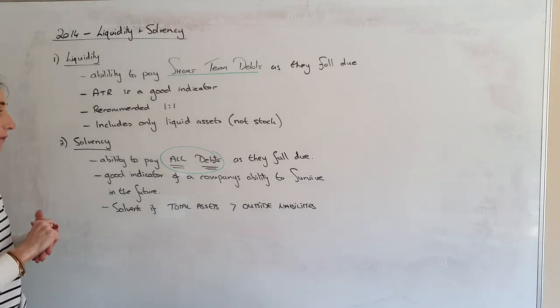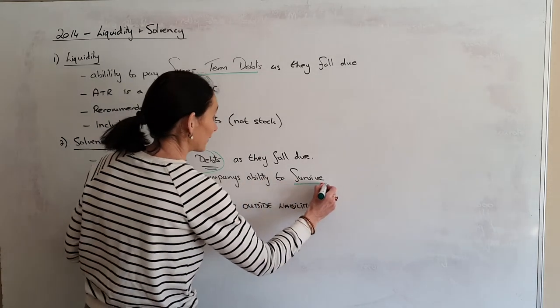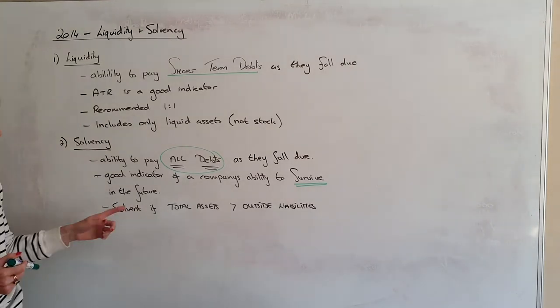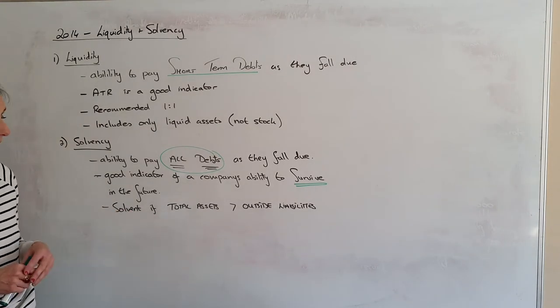Solvency, it's a good indicator of a company's ability to survive. So if you're not solvent, you're gone. Your business will not exist. The ratio that we use for solvency is your total assets has to be greater than your outside liabilities.